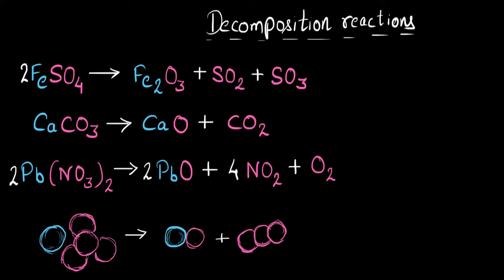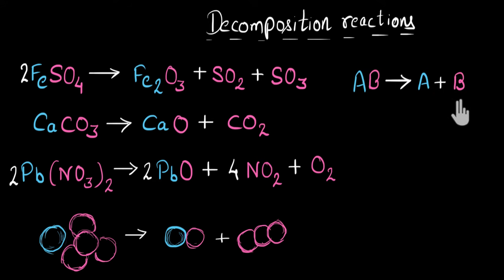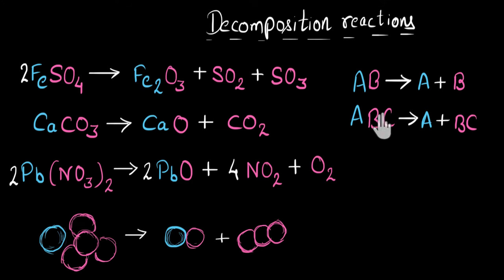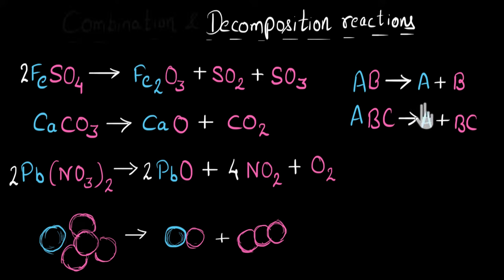If I write the general structure of decomposition, it looks like this: AB breaks down into A plus B. Or something like ABC breaking down to A plus BC. The main idea is that there will be only one reactant, and that will be breaking down or decomposing into several products. The products could be anything.